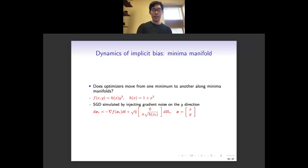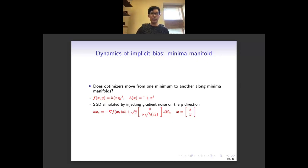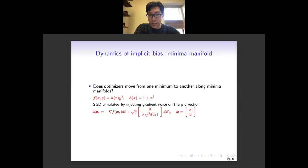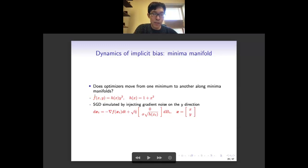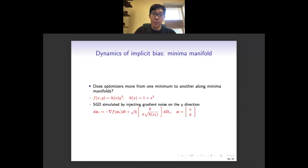The question is: given a minimum manifold, does the optimizer move from one minimum to another along this manifold? And the answer is yes. Consider a two-dimensional function f(x,y) = h(x)·y², where h(x) = 1 + x². When y equals zero, we have global minima — so the global minimum forms a manifold which is exactly the x-axis. We consider an SGD minimizing this function approximated by an SDE. The loss landscape shows a manifold of minima on the x-axis, but the sharpness around this minimum changes — we get the flattest minimum at (0,0), and sharper minima as we move away from zero.